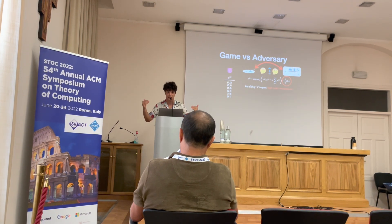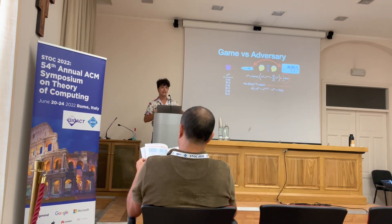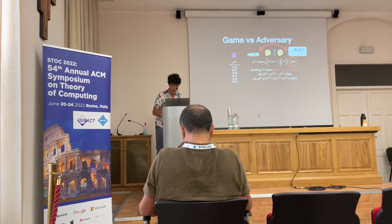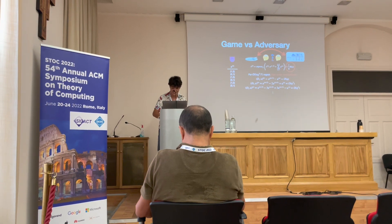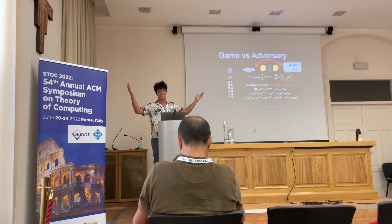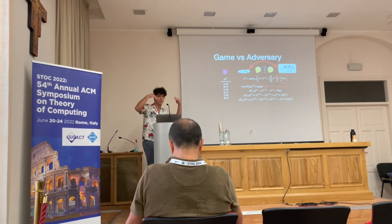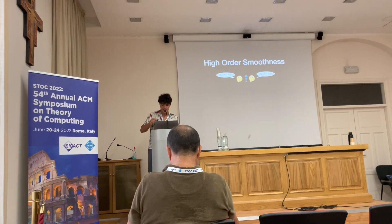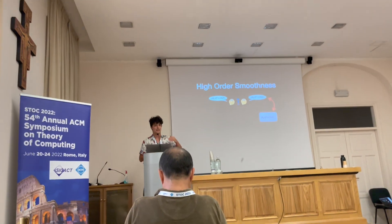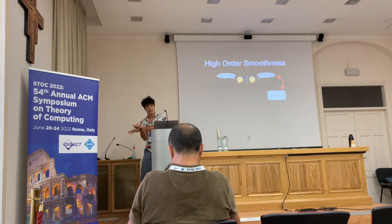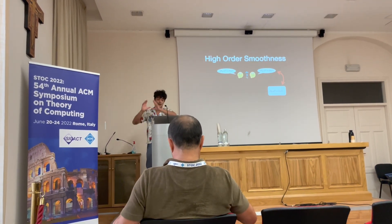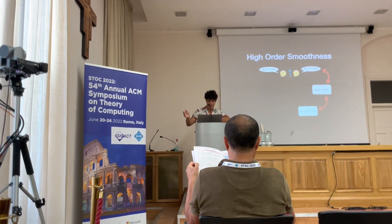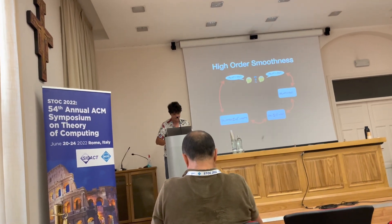The key idea behind getting polylogarithmic regret is higher-order smoothness: not only are consecutive utilities bounded, but the consecutive differences of that sequence are bounded by something even smaller. Think of the function sin(η·t) — a very low frequency wave has this property where derivatives decrease exponentially. The proof comes from an inductive loop: a bound on the h-th order derivative of my strategies bounds the h-th order derivative of my utilities. But the utilities depend on strategies, and strategies depend on the entire cumulative history of utilities — giving an (h+1)-th derivative bound on the total sum. It loops.